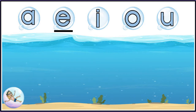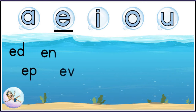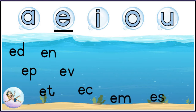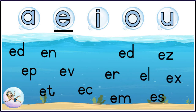E — ready for our silly short sounds? Ed, in, ep, ev, it, ick, em, is, er, ed, is, el, ex, ick. Well done, great ones. You can try this on your own as well. Let's move on to the next bubble letter.